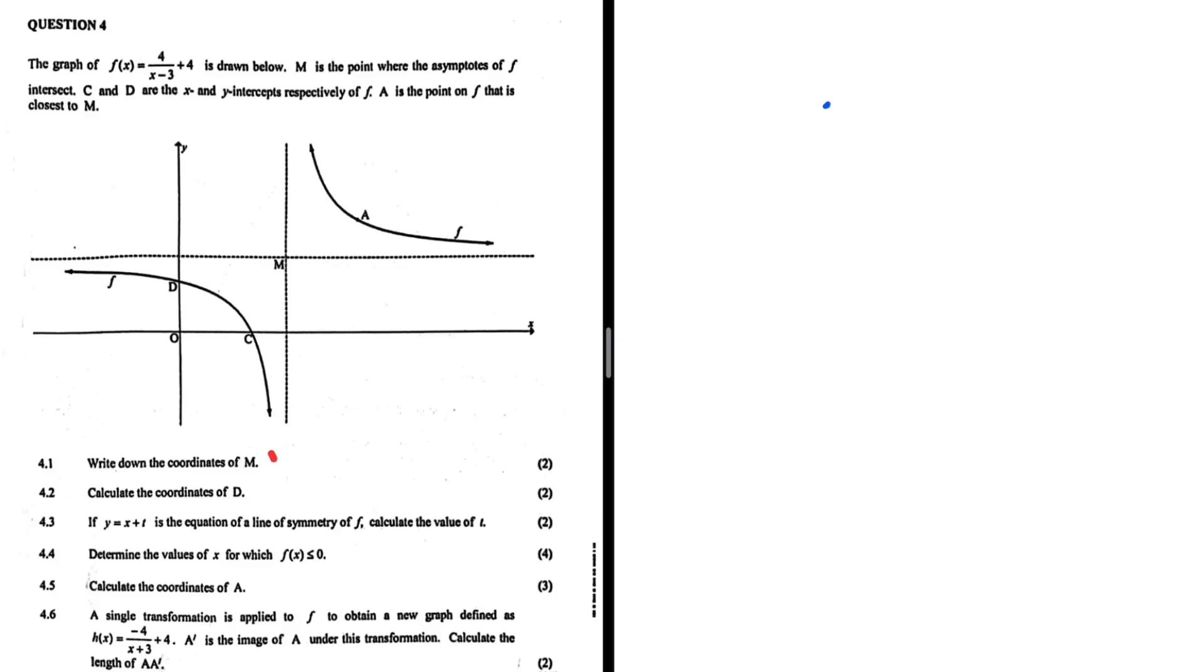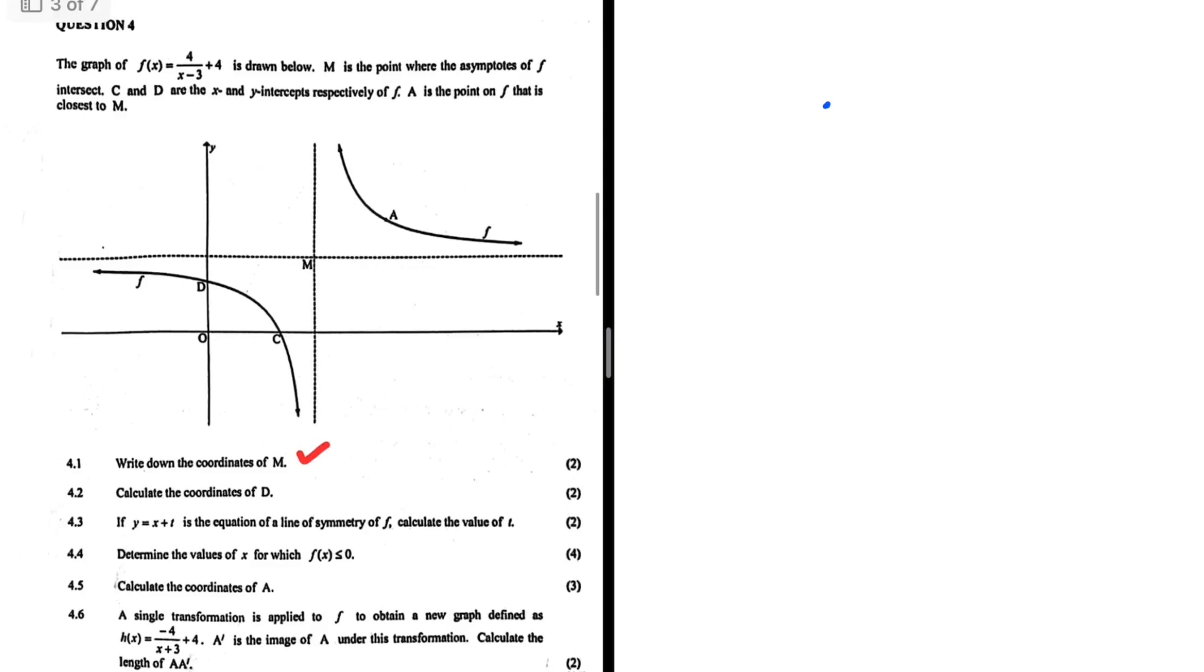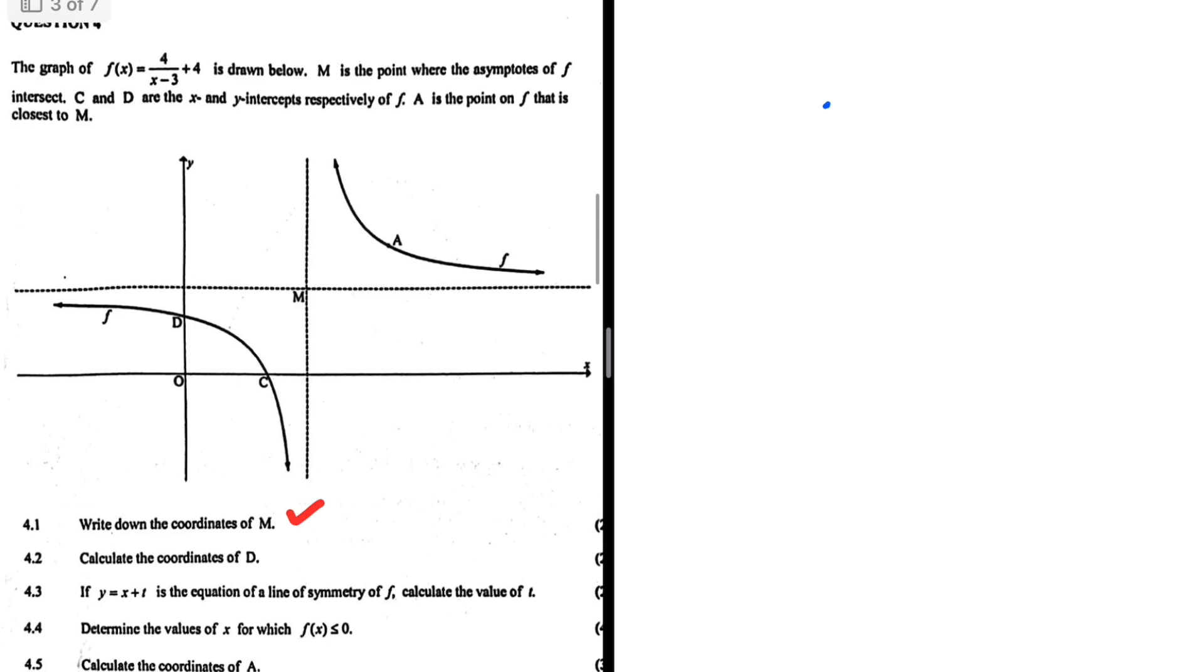Write down the coordinates of M. So M is the point where the asymptotes of F meet.